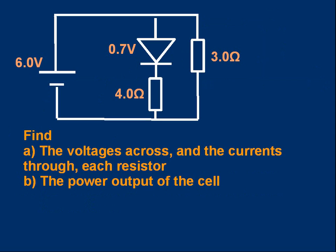Let's move on. Here's a simple circuit. Six volt EMF cell, a diode in series with a resistor, and another resistor. You're told the voltage across the diode is 0.7 volts. Look at the circuit. You've got two tasks. First task is find the voltages across and the currents through each resistor. So what's the voltage and current for the 4 ohm resistor? What's the voltage and current for the 3 ohm resistor? And then find the power output of the cell. Pause the video, have a go.